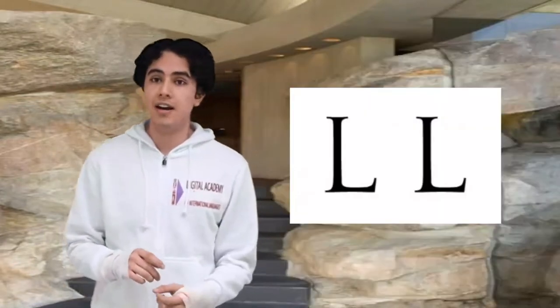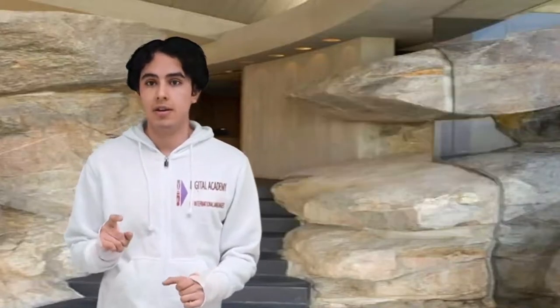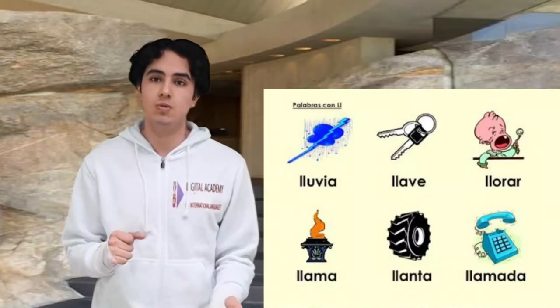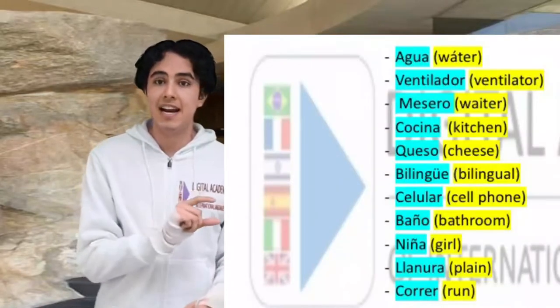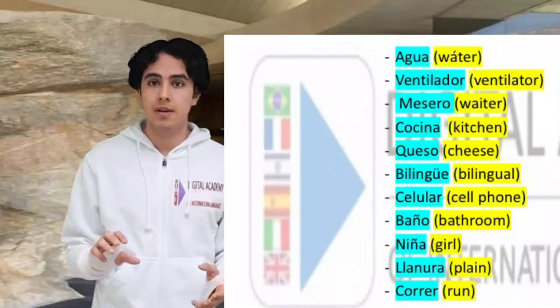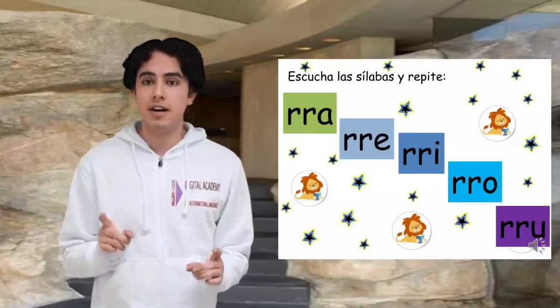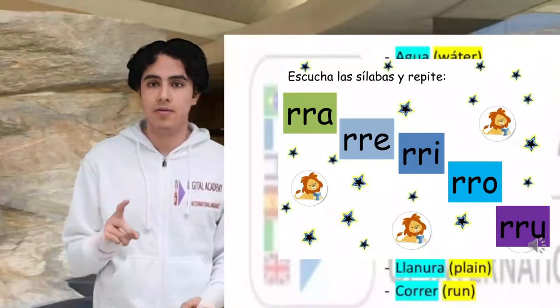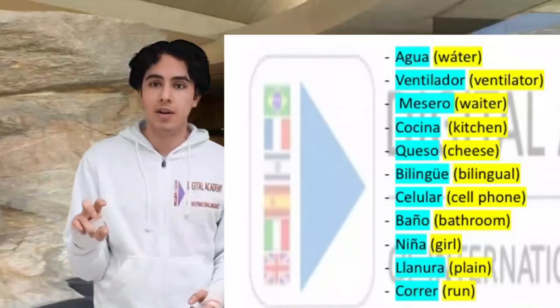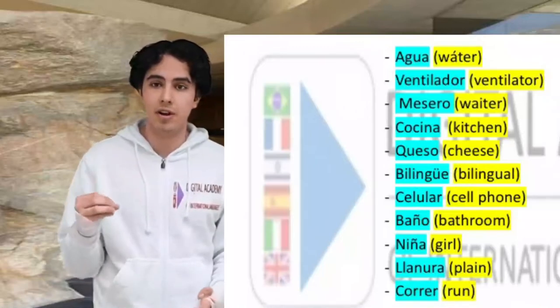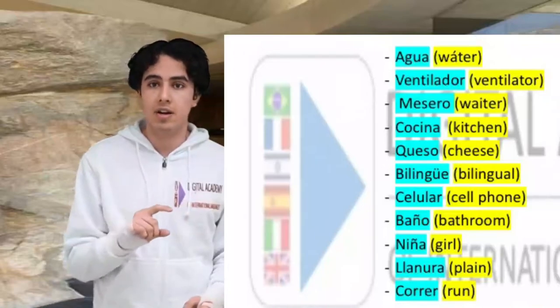In Spanish we also use the double L, which has its own pronunciation. It sounds like J or Y — ya, ye, yi, yo, yu. Another example is llanura — plane in English. Another letter not used in English is double R. For example, correr. Here we see a double R, like an R but much stronger — correr, meaning run.